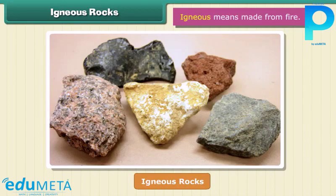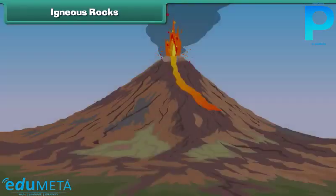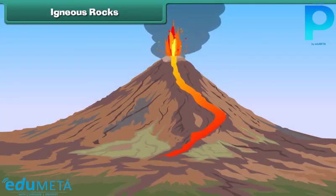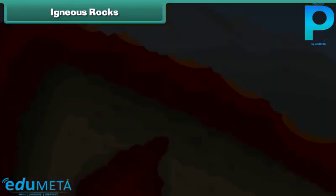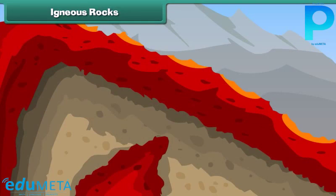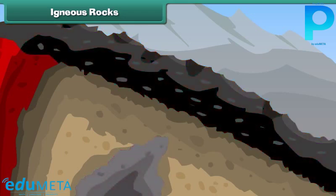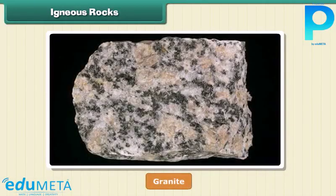Igneous means made from fire. When volcanoes erupt, it causes the liquid rock to rise above the ground. When this liquid rock is present inside the earth, it is called magma. This magma cools and becomes solid. Rocks thus formed are called igneous rocks. They are also called primary rocks. Granite is an example of igneous rock.